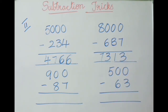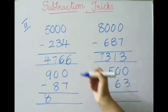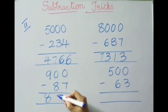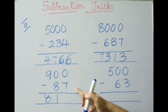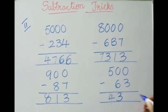See the next example: nine hundred minus eighty-seven. One less than one before — nine minus one is eight; all from nine — nine minus eight is one; last from ten — ten minus seven is three. The answer is eight hundred and thirteen. Last example in this method: five hundred minus sixty-three. One less than one before — five minus one is four; all from nine — nine minus six is three; last from ten — ten minus three is seven. The answer is four hundred and thirty-seven.